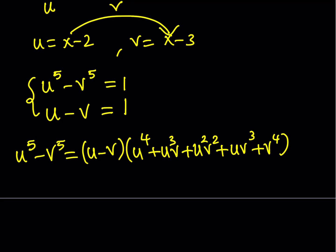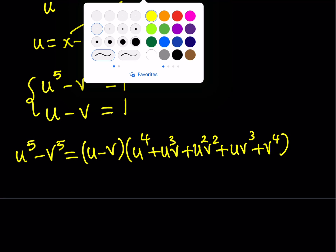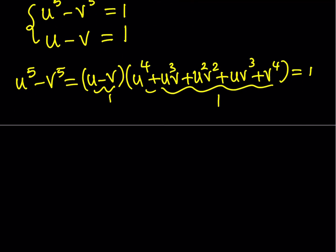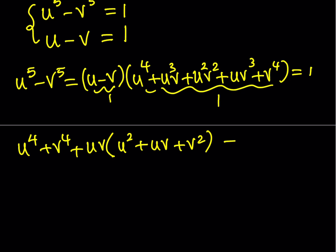You can factor when you have a difference of powers, and you can always factor it — even if this is a plus sign, as long as the power is odd. So we know that u minus v equals 1 and u to the fifth minus v to the fifth equals 1, which means the second factor also equals 1. Let's write that down, rearranging it as u to the fourth plus v to the fourth plus uv times the quantity u squared plus uv plus v squared, which is equal to 1.